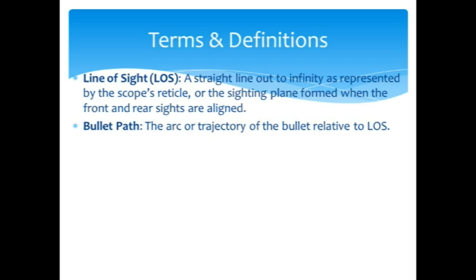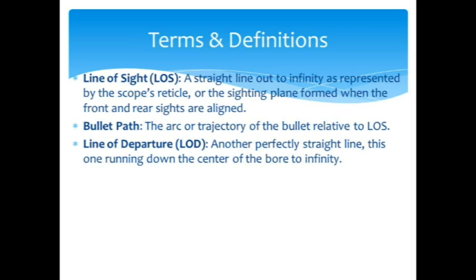The bullet path is the arc or trajectory of the bullet relative to the line of sight. Line of departure, another perfectly straight line, this one running down the center of the bore of the barrel, out to infinity. So if you could draw a straight line out of the barrel of your gun and hold that gun, that line would draw straight the whole way to the stars or the moon or Mars or wherever it goes.